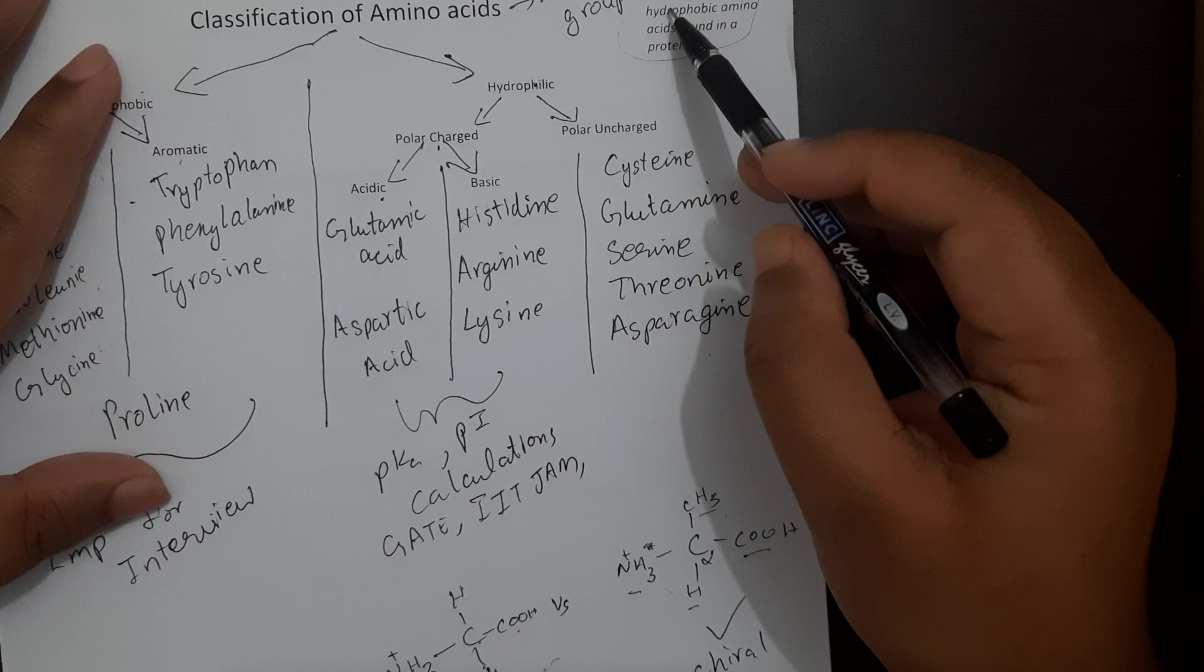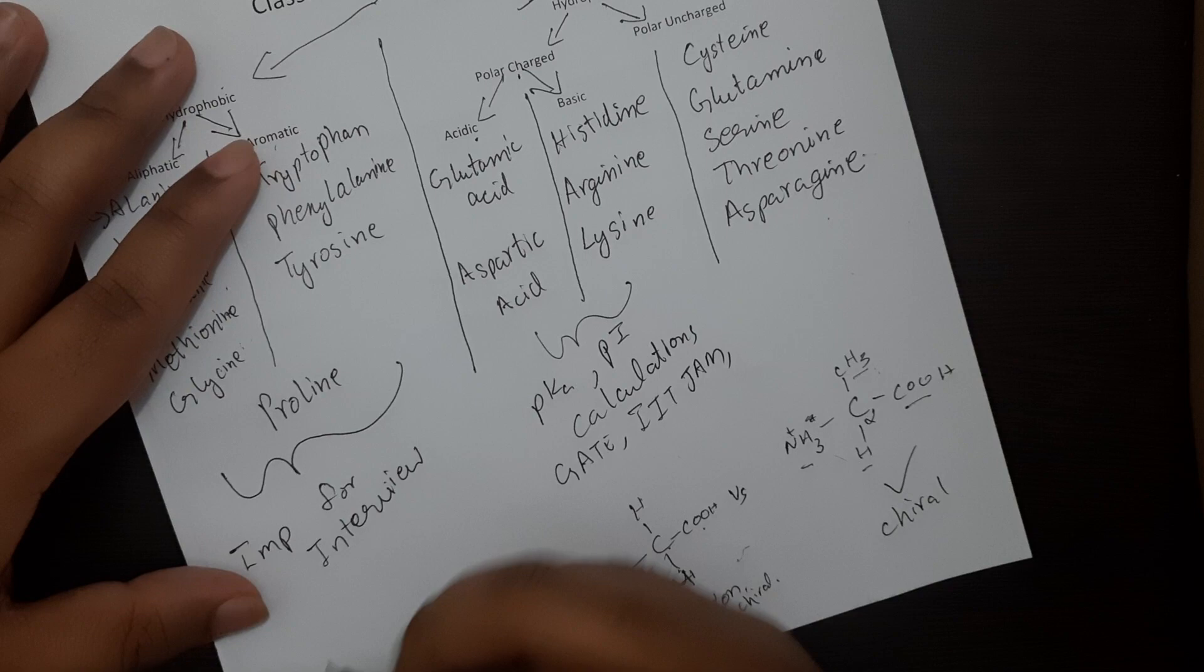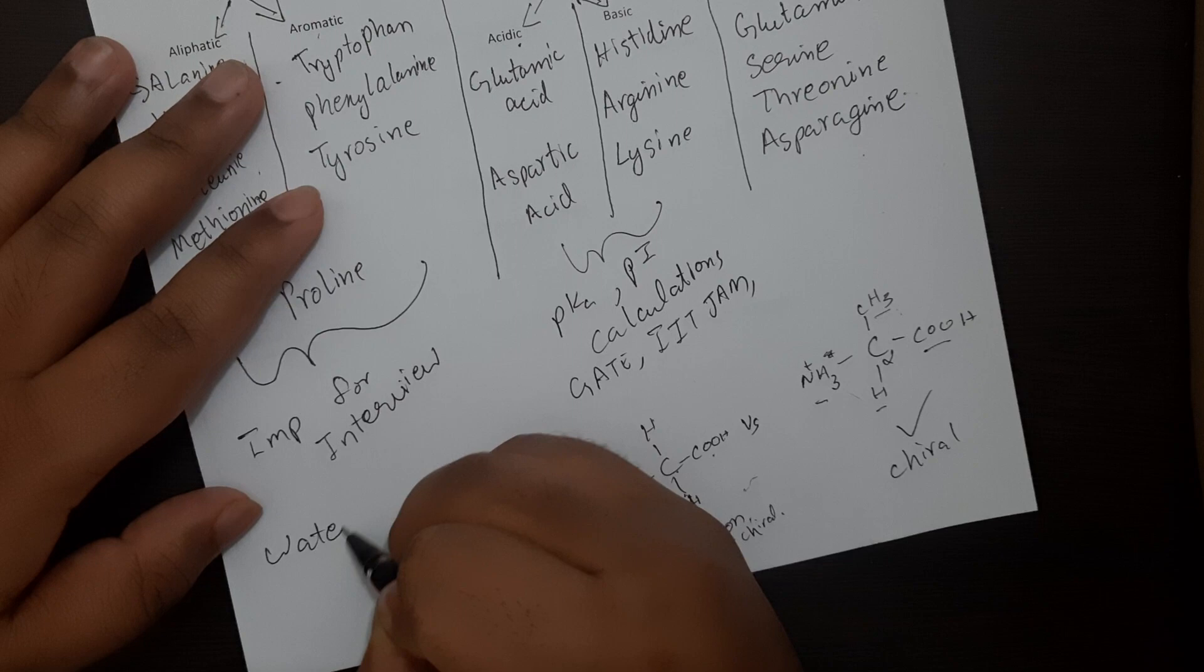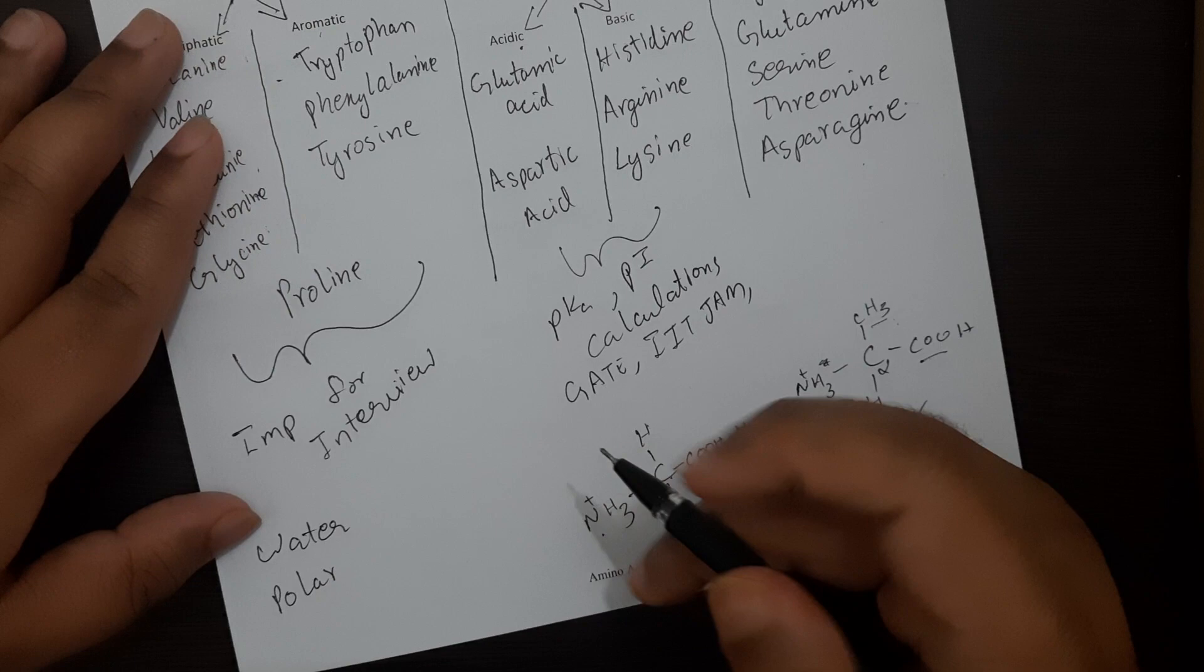Now that brings us to the end of it. Just before we go, there's a final question. Where are hydrophobic amino acids usually found in a protein? Now we all know in our body the major solvent is water. And we all know water is a polar solvent.